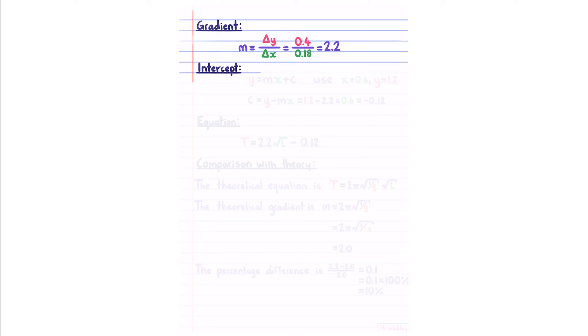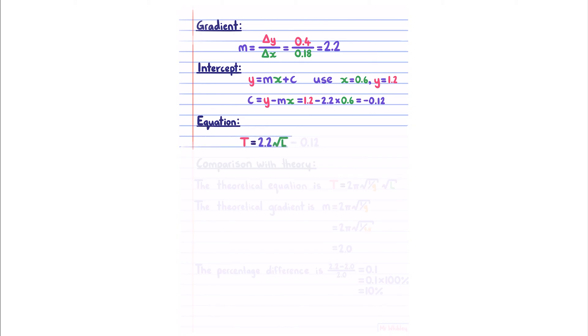To find the intercept, you could sometimes read this off your graph, provided the intercept is positive, and you haven't truncated, but for all cases this method will work. If we know that y is equal to mx plus c, we know that c is equal to y minus mx. If we pick any point on our line, in this case we're going to use x equals 0.6, y equals 1.2, we can substitute those values, including our gradient, and find our intercept is negative 0.12. The equation of our line is therefore t equals our gradient of 2.2 times the square root of l, plus our intercept, which is negative 0.12.